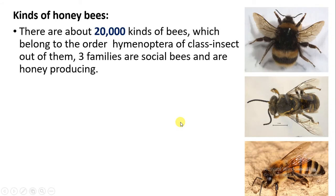There are 20,000 kinds of honeybees, which belong to the order Hymenoptera — insects having four transparent wings, and where especially the females have a sting apparatus. They also belong to the class Insecta. Among them, we will study only three families, which are social bees and honey-producing bees.